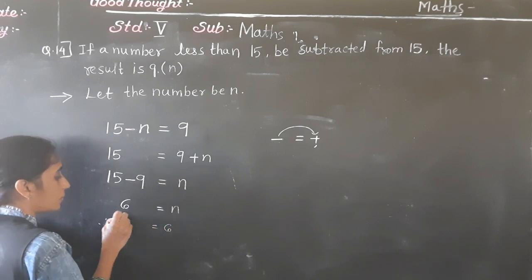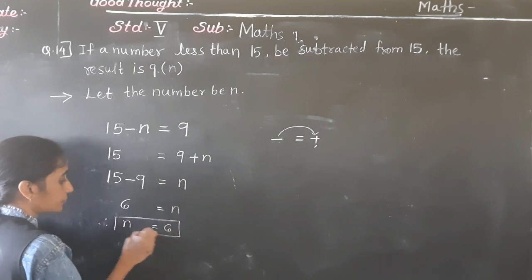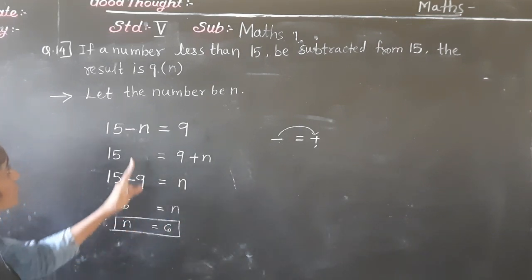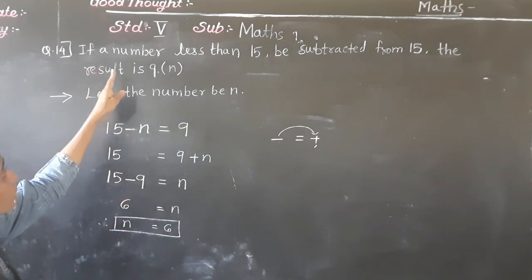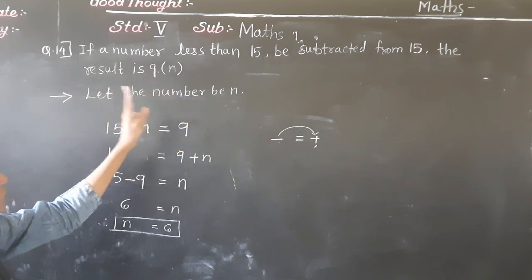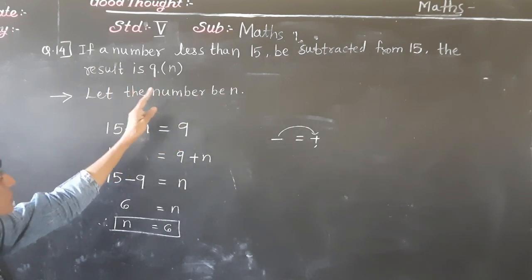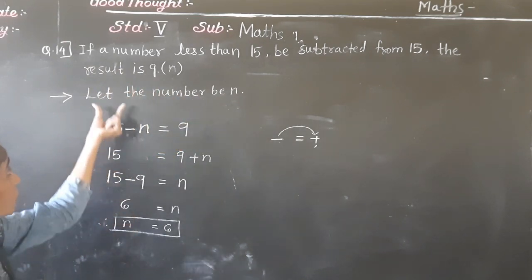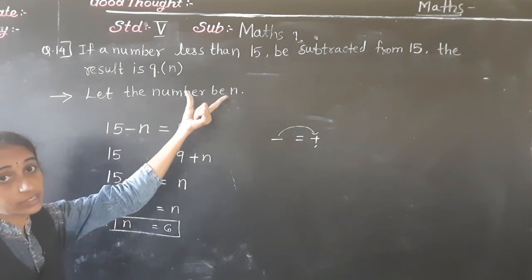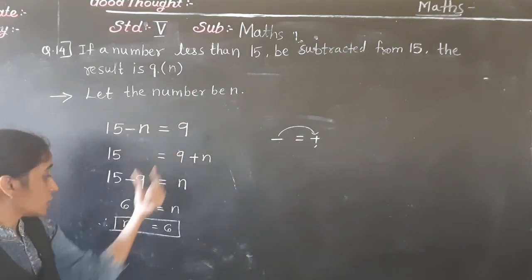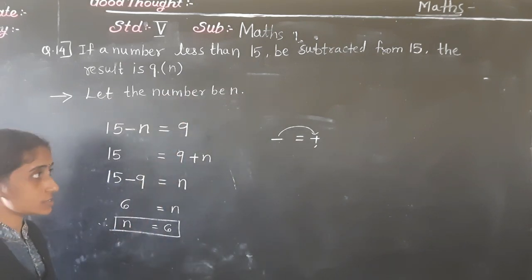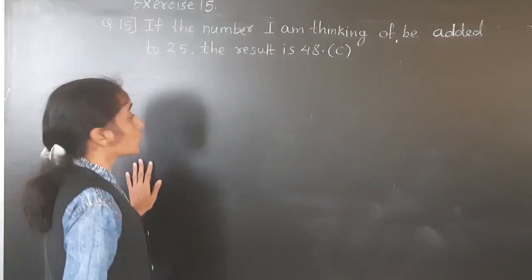So the number is 6. If a number less than 15 is subtracted from 15 and the result is 9, we have found N = 6. Now let's solve question number 15.